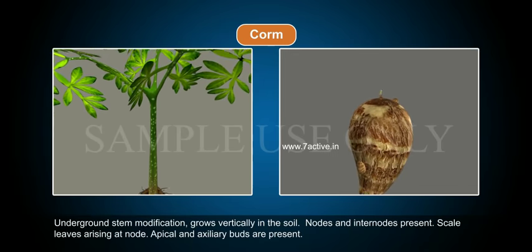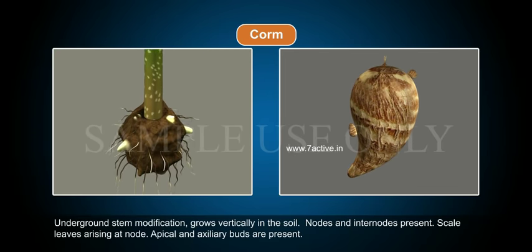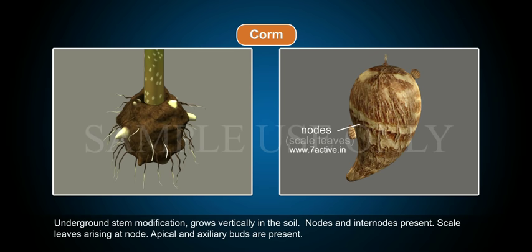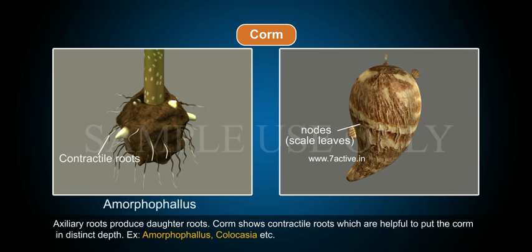Corm: an underground stem modification that grows vertically in the soil. Nodes and internodes are present; scale leaves arise at nodes. Apical and axillary buds are present. Adventitious roots produce daughter roots; corms show contractile roots which are helpful in placing the corm at a distinct depth. Examples include Amorphophallus and Colocasia.